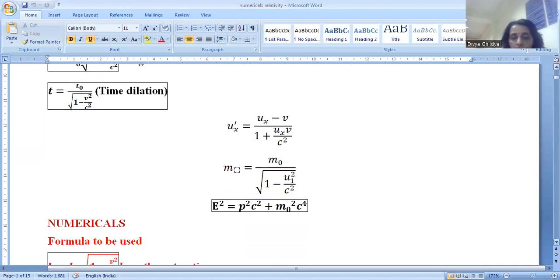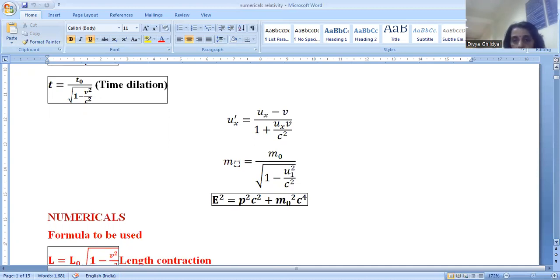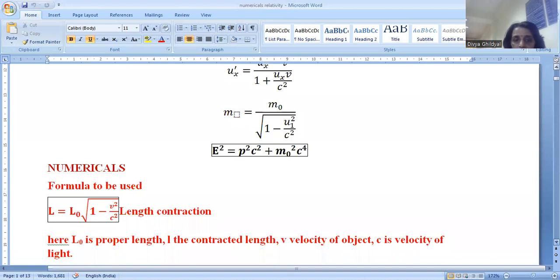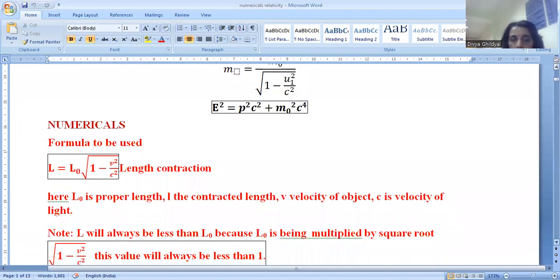One very famous equation giving the relationship between energy and momentum: E square is equal to m not square c to the power of 4. What all other formulas are to be used? See, length contraction.